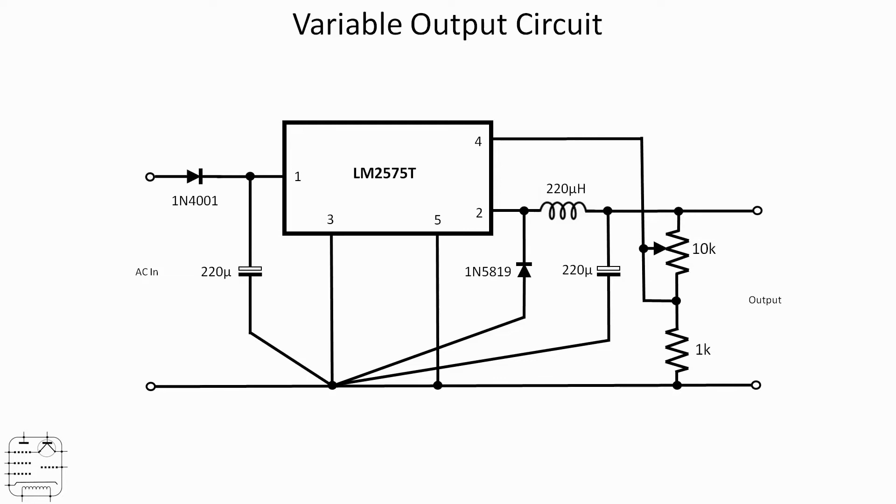Now the 1N5819 is a Schottky diode. It's not just any old diode, so just be aware of that. Relatively easy to get hold of though. And then we've got a voltage divider across the output with a 1K resistor to ground, but then the 10K resistor at the top is actually a pot that allows us to control the voltage.